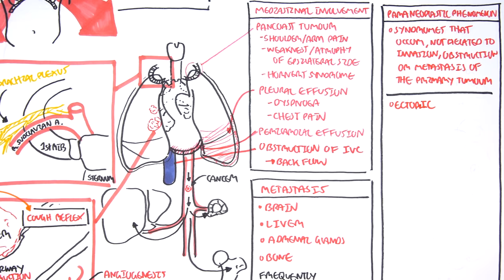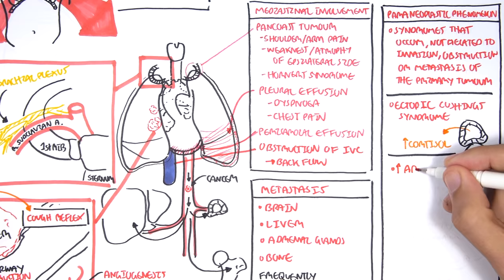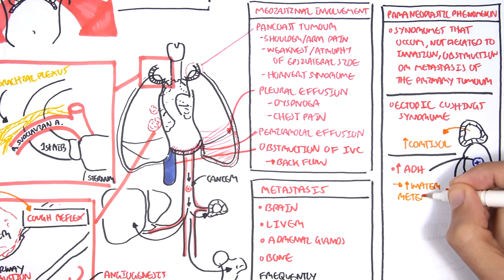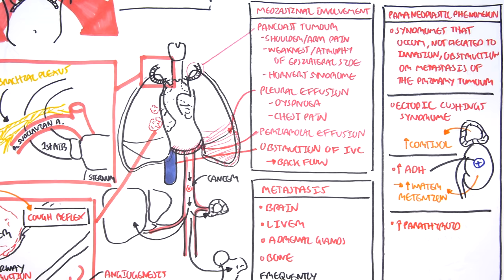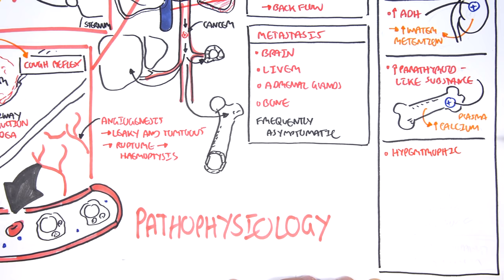The paraneoplastic syndromes include the following: Ectopic Cushing syndrome, where the hormone released by cancer cells stimulates the adrenal glands to produce cortisol. We also have antidiuretic-like substance secreted by the neuroendocrine cells which stimulates the kidneys to retain water. These neuroendocrine cells also produce a parathyroid hormone-like substance which stimulates the bone to break down its minerals and release calcium into plasma, increasing blood calcium levels resulting in hypercalcemia.